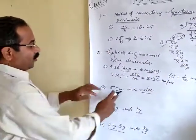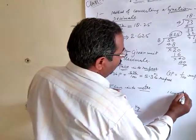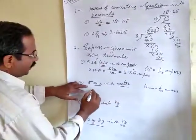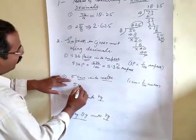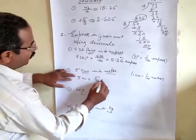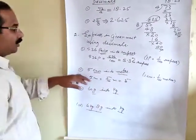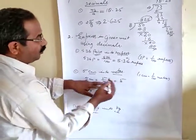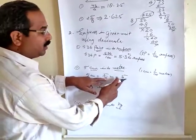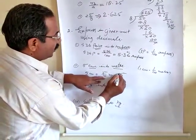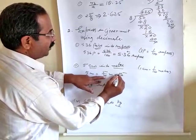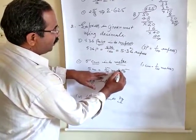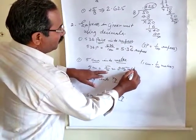1 centimeter equals 1 by 100 meter. So 5 centimeter equals 5 by 100 meter. Write the numerator 5, but there are two zeros in the denominator so you need two digits. Only one digit is given, so increase one zero to the left. Put the decimal point, and if there is no digit before it write zero. The answer is 0.05 meter.